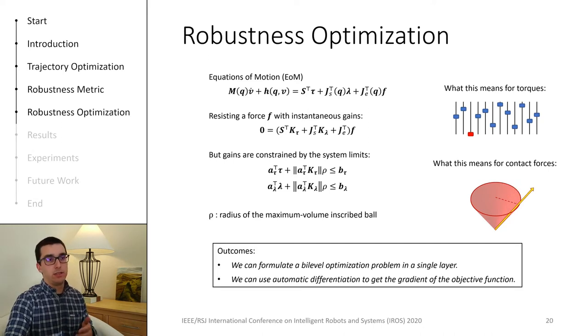After deriving these constraints, it is now possible to go back to our framework and formulate a bi-level optimization problem, which not only finds a feasible trajectory, but also maximizes our robustness metric. Let's have a look at that now.